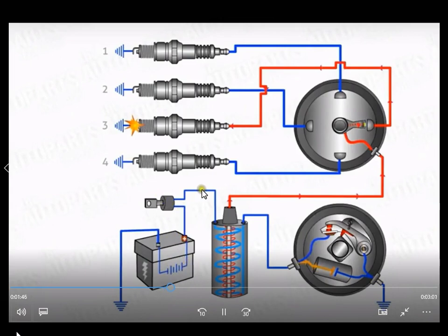This is battery symbol. This positive is come to switch. Then connect to ignition primary coil. This primary coil is low turn. This battery ignition coil.